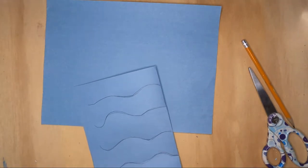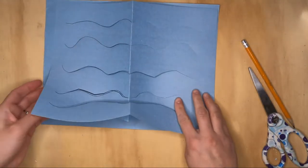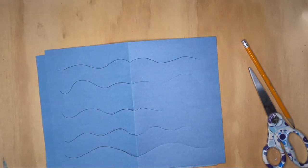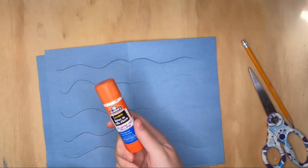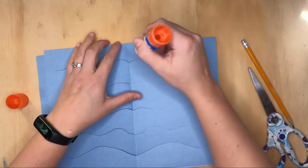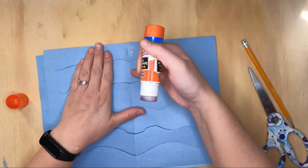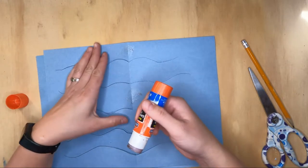So now what we're going to do is open it up and there's our wavy water. All right, and now you're just going to grab your glue stick and we're going to glue every other one of these.